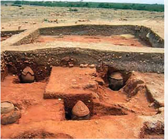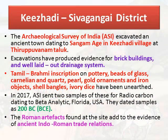The next important site is Kiradi in Sivagangai district. The Archaeological Survey of India (ASI) excavated an ancient town dating to the Sangam Age at Kiradi village. The excavations produced evidence for brick buildings and a well-laid-out drainage system. Tamil Brahmi inscriptions on pottery, beads of glass, carnelian and quartz, pearl, gold ornaments, iron objects, shell bangles, and ivory dyes have been unearthed.